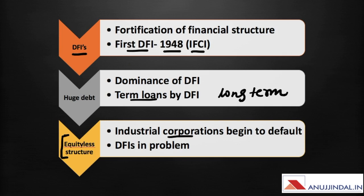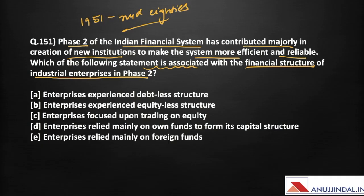Industrial corporations began to default as they were not in a position to repay back to the DFIs, and eventually the DFIs were in trouble. This may have been the reason that in phase 3 some DFIs were converted and privatized. The question's option stating enterprises experienced a debt-less structure is wrong; they experienced an equity-less structure. So the correct answer is option B.